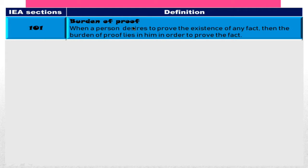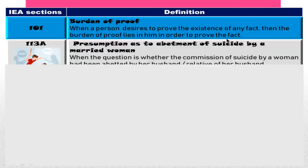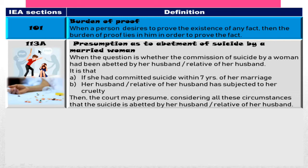Section 101 IEA talks about the burden of proof. If a person wants to prove the existence of a particular fact, it wholly depends on him to take the burden to prove that particular fact.